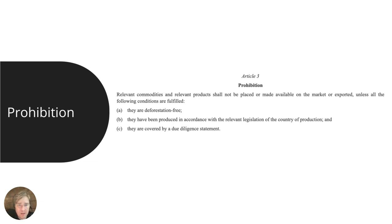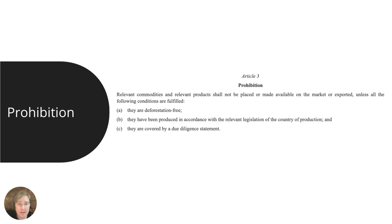Let's look at prohibitions. Article 3 states that relevant commodities and relevant products shall not be placed or made available in the EU unless three conditions are fulfilled. First, they must be deforestation-free — the raw materials from which products are derived must not originate from areas with illegal logging. The EUDR goes beyond the EU Timber Regulation and covers not just timber but also these other materials.